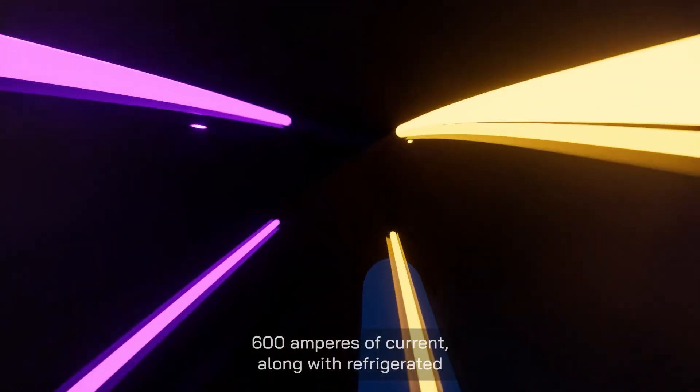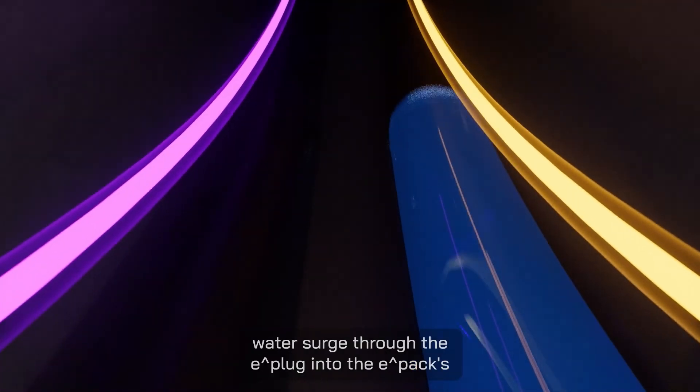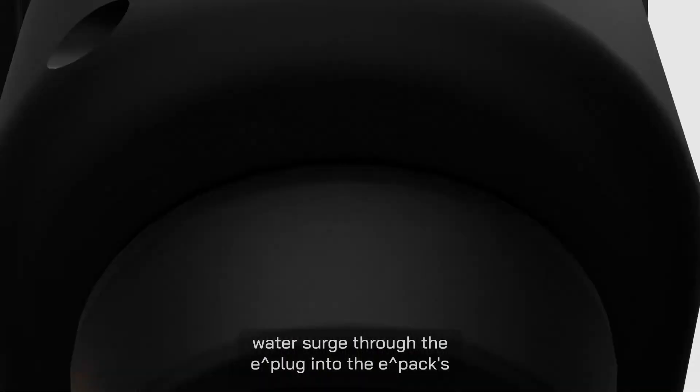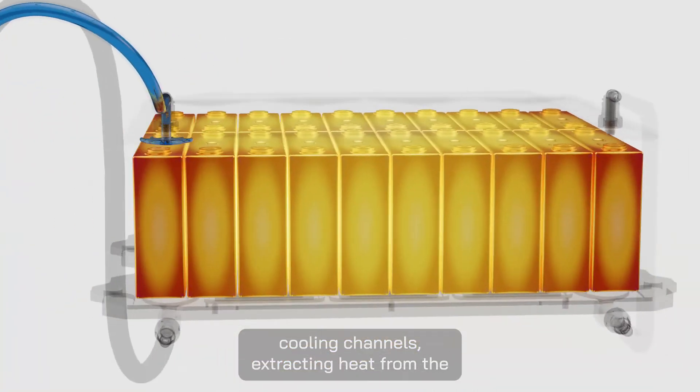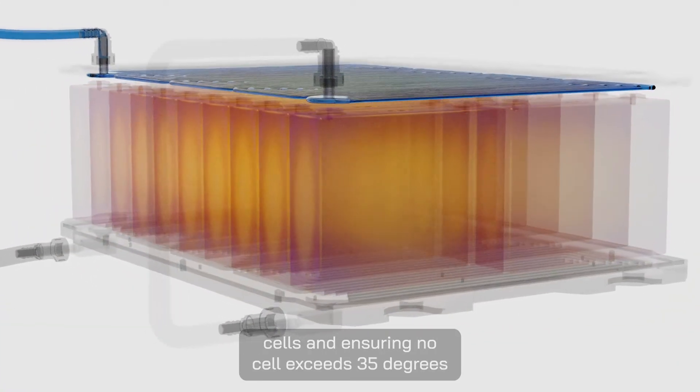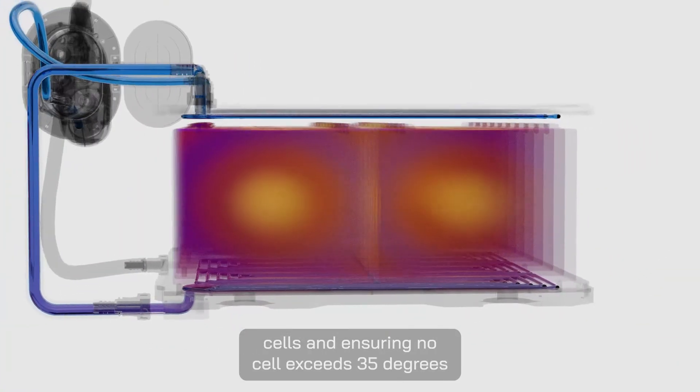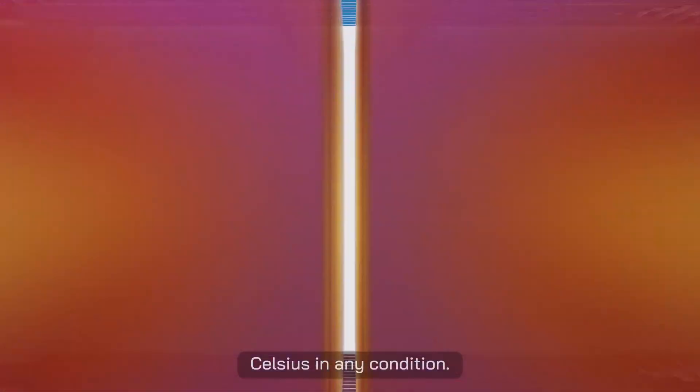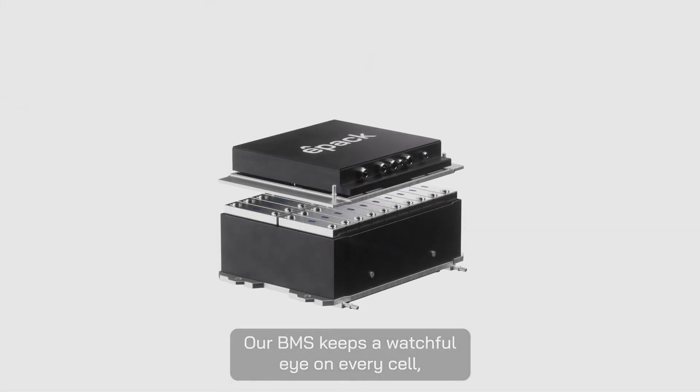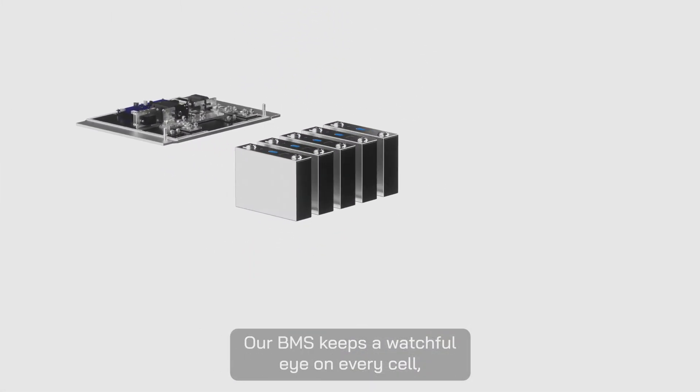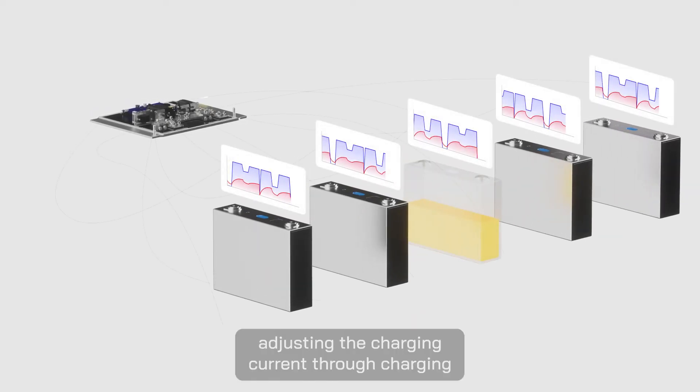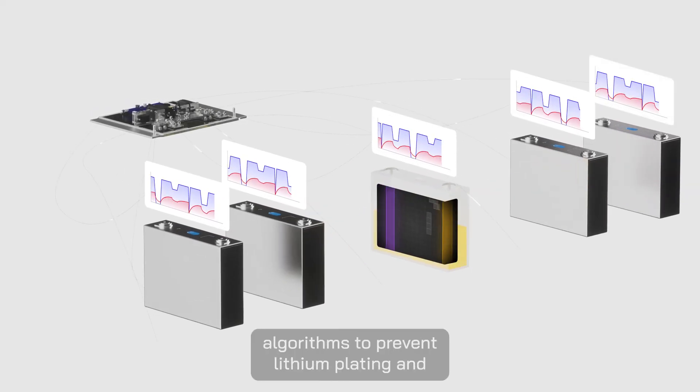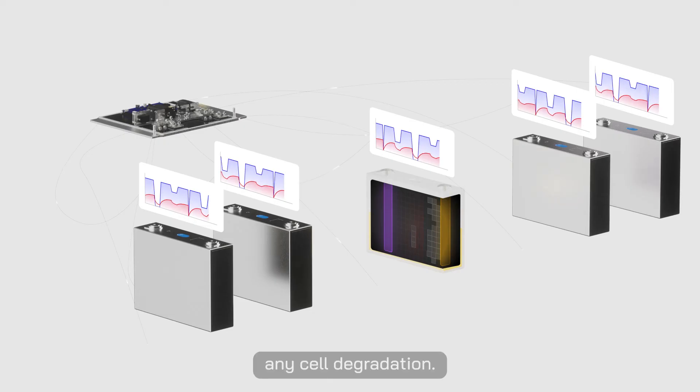600 amperes of current along with refrigerated water surge through the E-Plug into the E-Pack's cooling channels, extracting heat from the cells and ensuring no cell exceeds 35 degrees Celsius in any condition. Our BMS keeps a watchful eye on every cell, adjusting the charging current through charging algorithms to prevent lithium plating and any cell degradation.